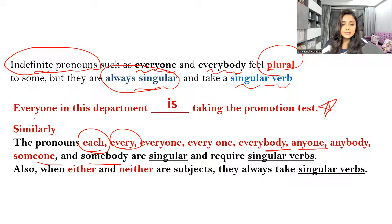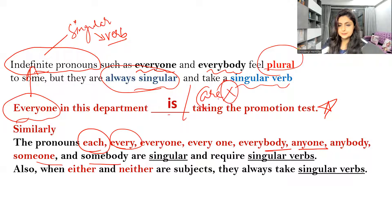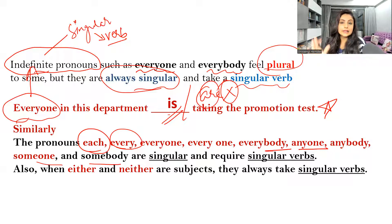Because 'everyone' is an indefinite pronoun, and indefinite pronouns are always considered singular. That's why it takes a singular verb. So 'are' will not come here — 'is' will come. The subject is an indefinite pronoun and indefinite pronoun always takes a singular verb. This is a very important thing.